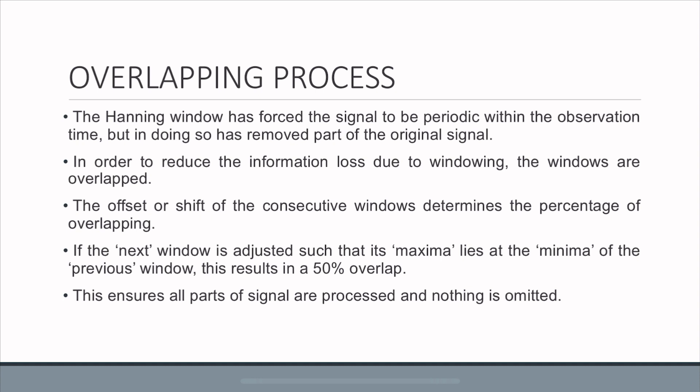If you have 0% overlap, it means you don't have any consecutive windows. But if the next window is adjusted such that it's maximized at the minimum of the previous window, this results in 50% overlap. When you have overlapping, it ensures that all parts of signal are processed and you're not having any information loss.